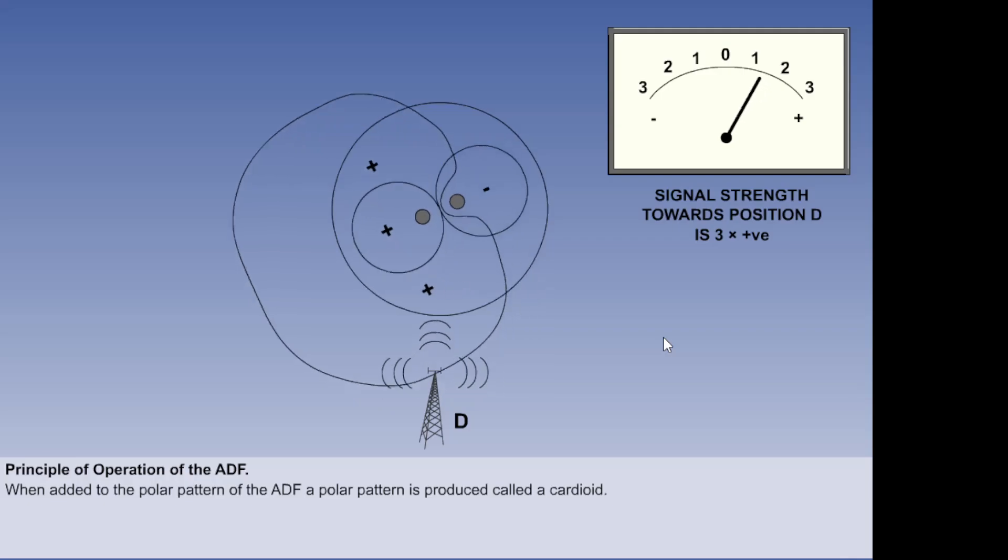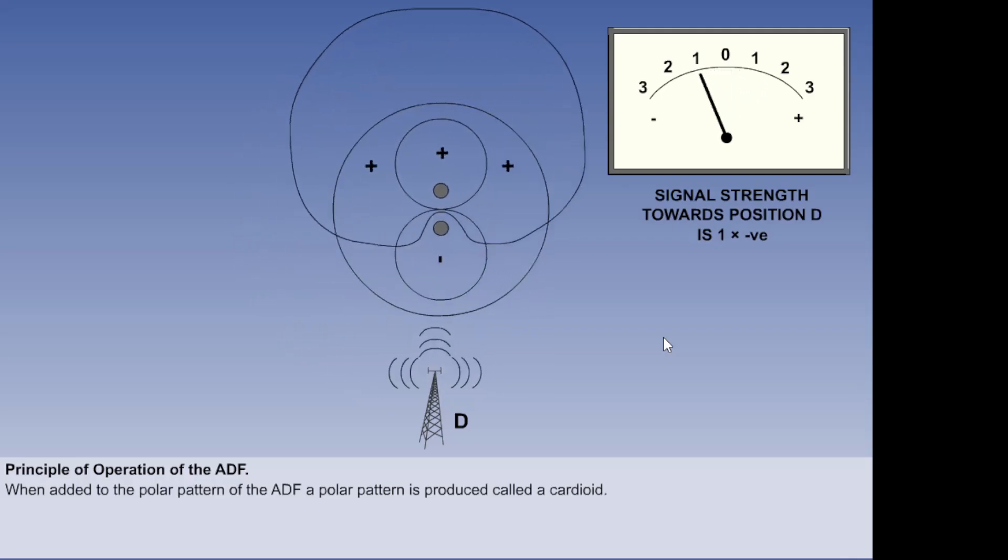If the loop is rotated clockwise, the signal strength will decrease. If the transmitter were in position B, the reverse would be true. Thus, if anti-clockwise rotation produces a stronger signal, the bearing is correct. However, if it produces a weaker signal, the bearing is a reciprocal.